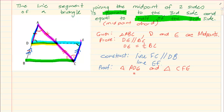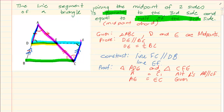What do we have? We have that angle A is equal to C1 — alternate angles, because AB is parallel to CF. Then we have that AE is equal to EC — that was given to us as the midpoint. And the last angle: D1 is equal to F — again alternate angles, because AB is parallel to CF.